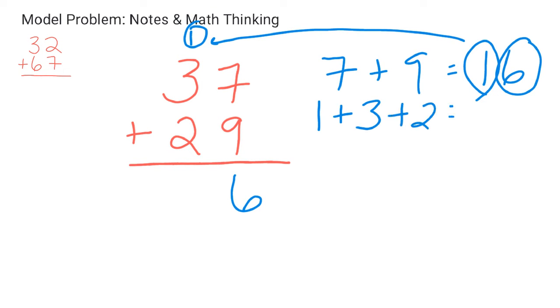And then I'm going to go ahead and add one plus three plus two. And one plus three is four. I'm going to add two. That's going to give me six, okay? So my final answer is 66. So that is two-digit addition with regrouping.